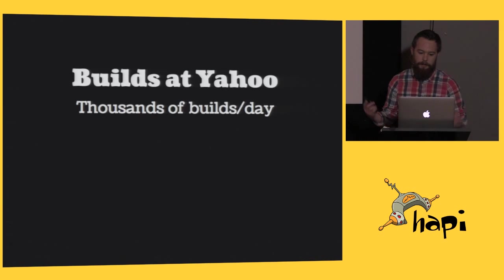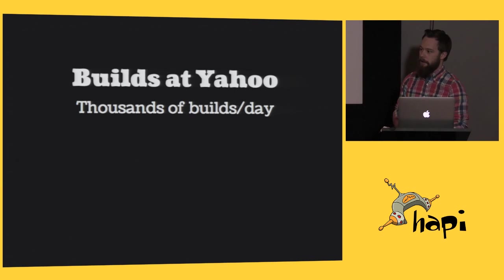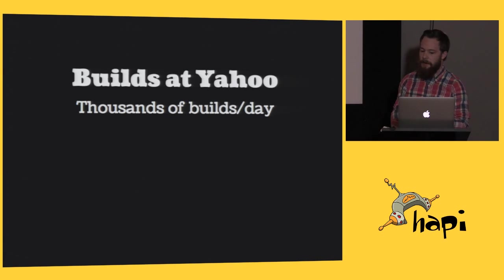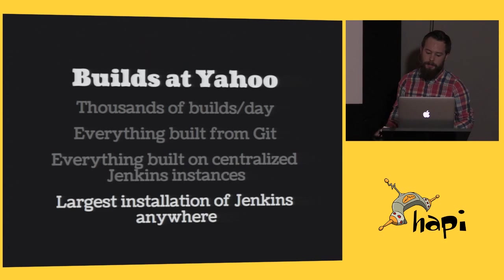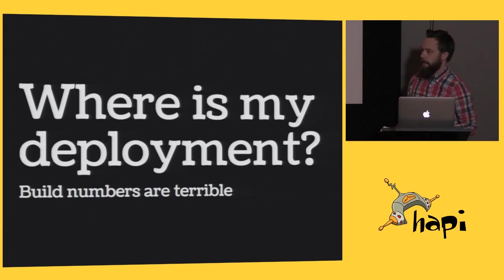To give you an idea of what we do: the system I work on is one of five systems, and all of them are being consolidated into ours. Ours is responsible for 5,000 to 6,000 builds per day, and the whole company is in the tens of thousands. Everything is built from Git, and everything is built with Jenkins — and we're definitely the largest installation of Jenkins anywhere.